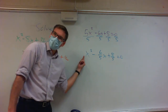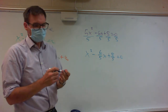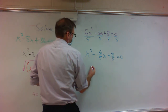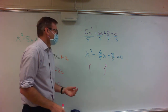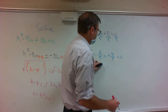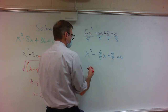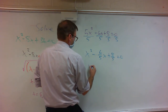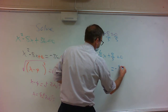Now I have a 1 in front, so now I can complete the square. I've got to move the number over: x squared minus 6 over 5x equals negative 8 over 5.